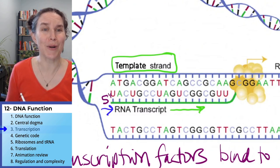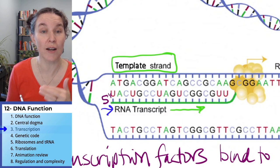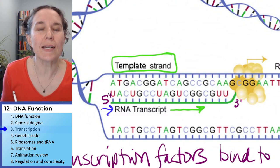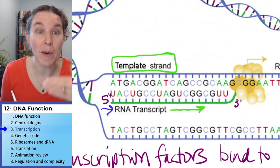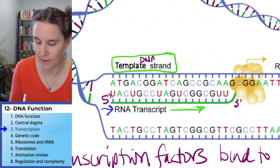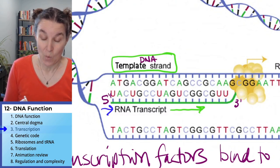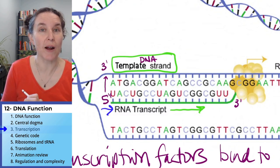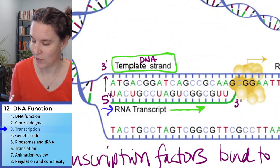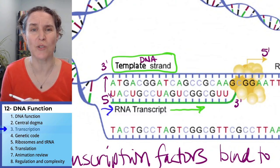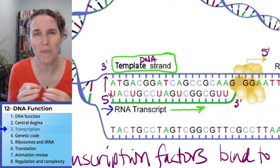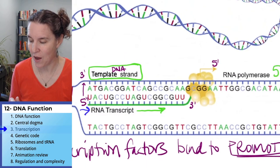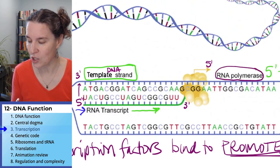The messenger RNA transcript runs five prime on this end to three prime on this end. That tells you about the template strand of DNA: if it's five prime on that end, this must be your three prime end of the template strand, and down here must be the five prime end of the template strand. That directional information tells us how RNA polymerase is going to get the job done.